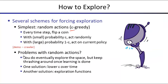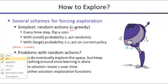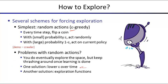The problem with random actions: you eventually explore the entire space, but may crash around for a long time collecting bad rewards. One solution is to lower epsilon as learning progresses — less exploration, more exploitation over time. But there's something better: exploration functions.